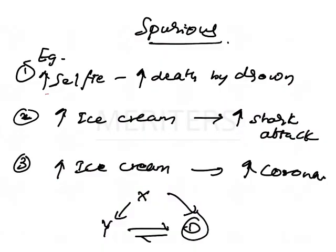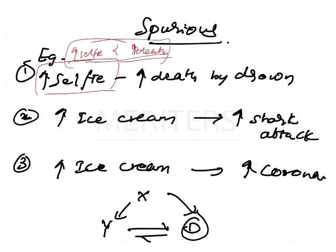For example: taking a selfie near a waterfall will lead to increased death by drowning. Maybe selfie is directly related to increased death by drowning, but it's not directly related. Maybe the person is careless, so they're taking selfie and it may lead to death by drowning.